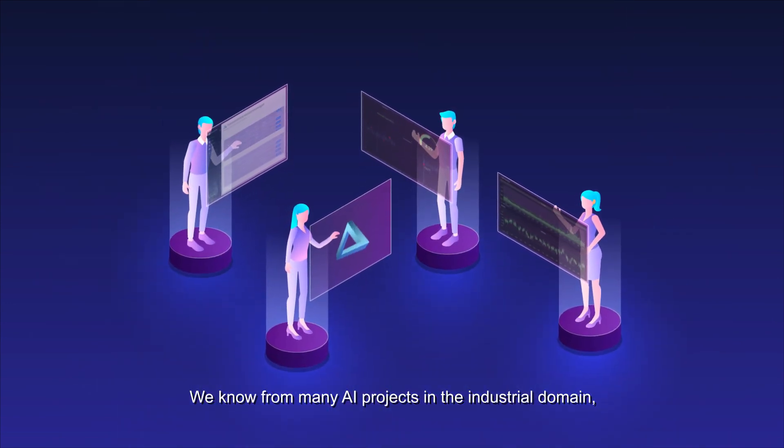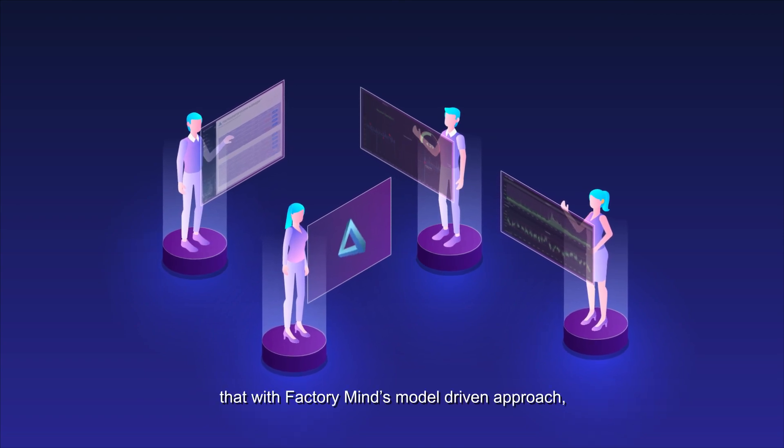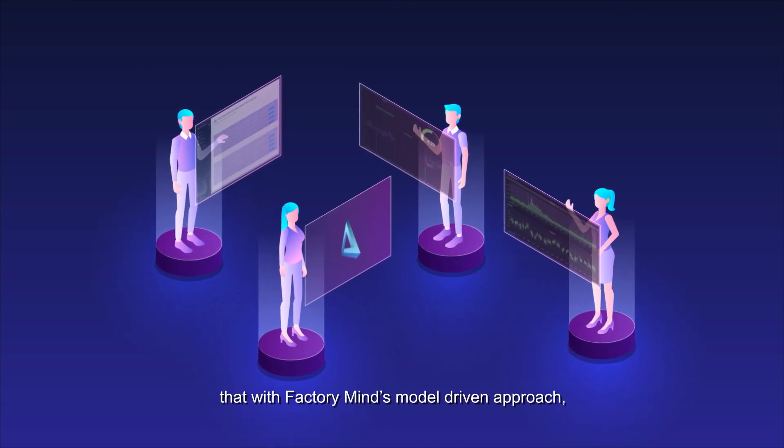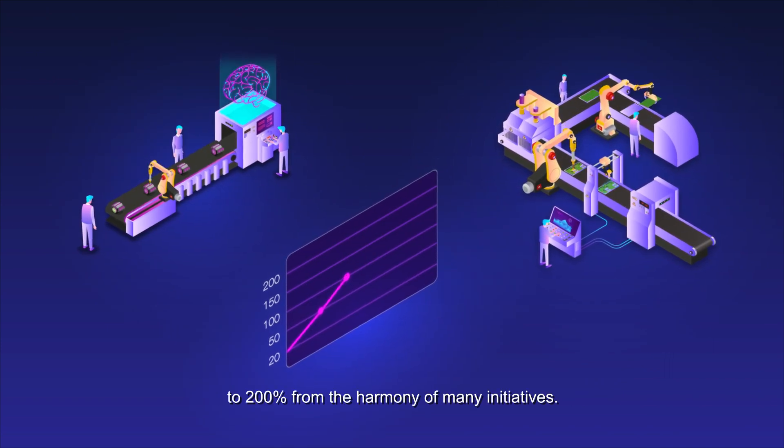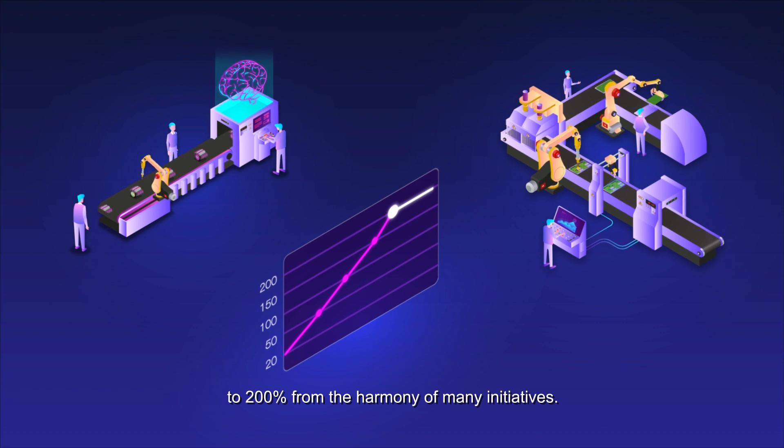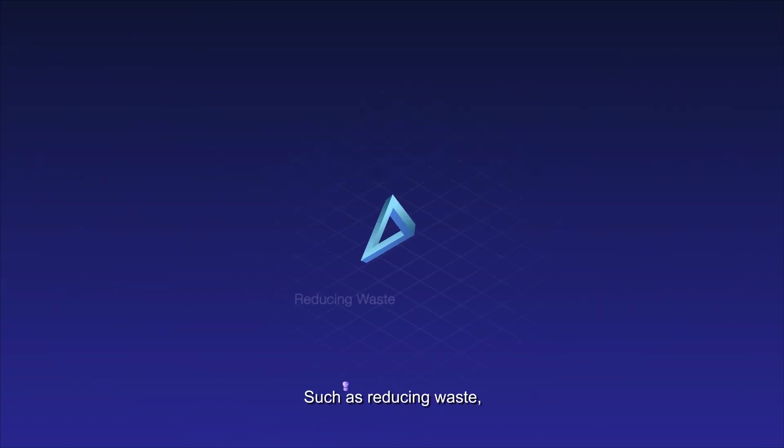We know from many AI projects in the industrial domain that with FactoryMind's model-driven approach, industries can capture overall efficiency gains from 20% to 200% from the harmony of many initiatives, such as reducing waste